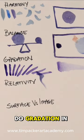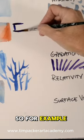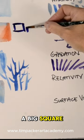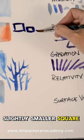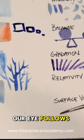We can also do gradation in shape or in size. So for example, if we have a big square, that might be a smaller square, that might be a smaller square, that might be a smaller square, and our eye follows that.